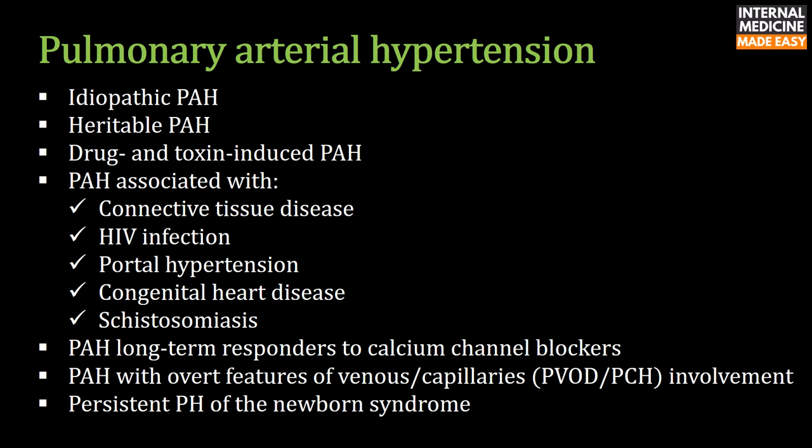Pulmonary arterial hypertension can be subdivided into: idiopathic pulmonary arterial hypertension, hereditary pulmonary arterial hypertension, PAH associated with drugs or toxins, connective tissue disease, HIV infection, portal hypertension, congenital heart disease, schistosomiasis, PAH long-term responders to calcium channel blockers, PAH with overt features of venous or capillary involvement, and persistent pulmonary hypertension of the newborn syndrome.